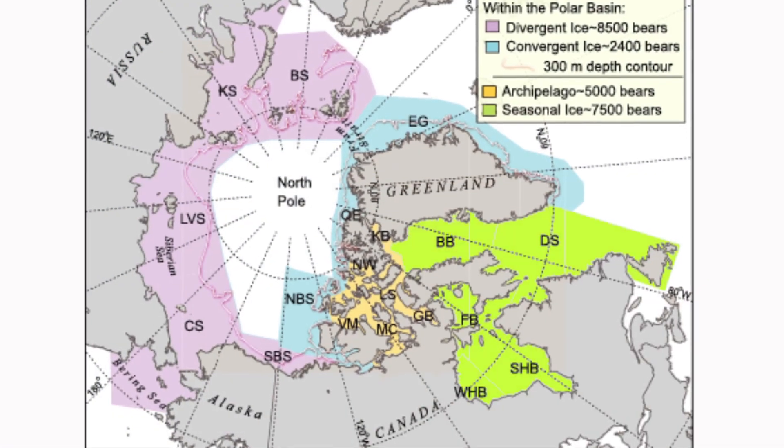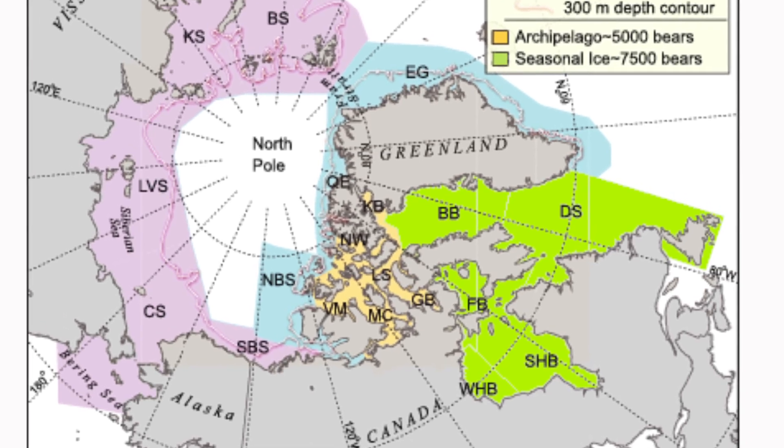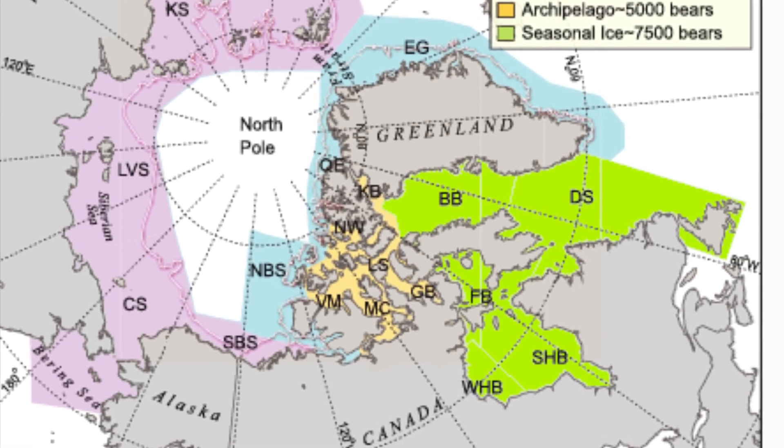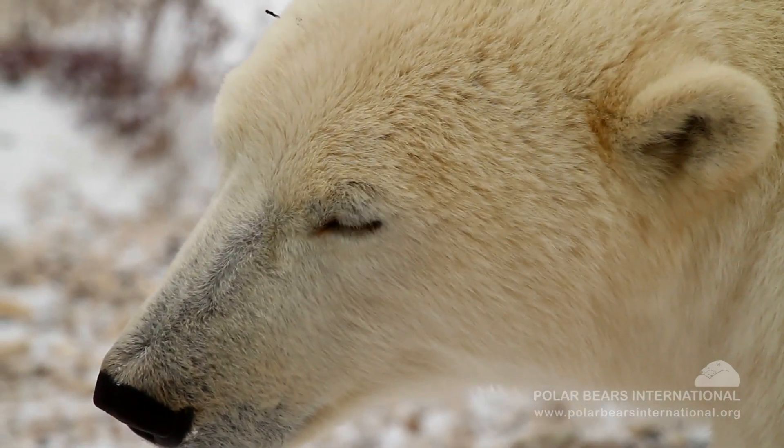In 2007 I developed the idea that some of these populations are more similar than they are different, and I grouped them into four different major ecoregions. There's the seasonal ice ecoregion — that's the one that we're standing in here on Hudson Bay — and it includes Davis Strait and Fox Basin. These are areas where the ice is only annual ice, so it melts entirely every summer, forcing the polar bears onto shore.